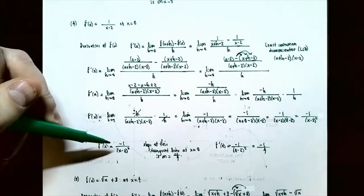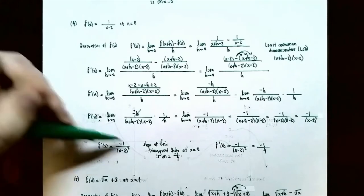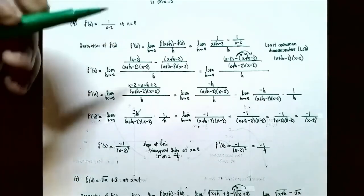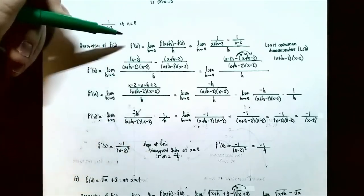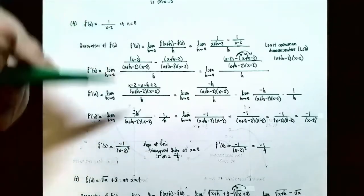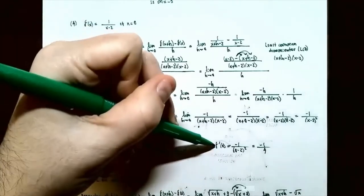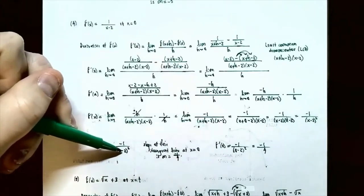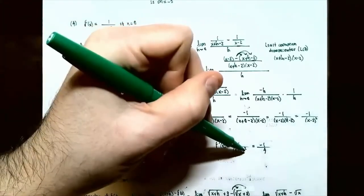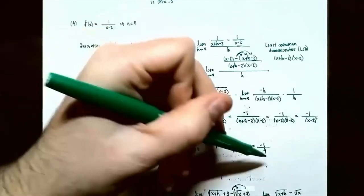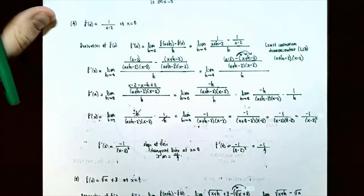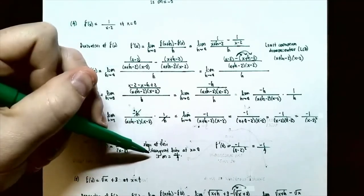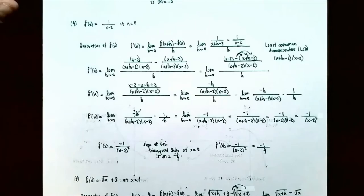Going back to the original question: find the slope of the tangent line at x equals 0. Plug 0 into the derivative: f prime of 0 equals negative 1 divided by the quantity 0 minus 2 squared, which equals negative 1 divided by 4. So the slope of the tangent line at x equals 0 is negative one-fourth.